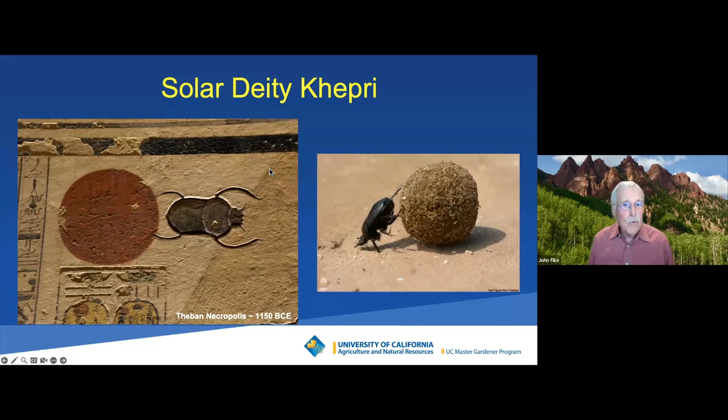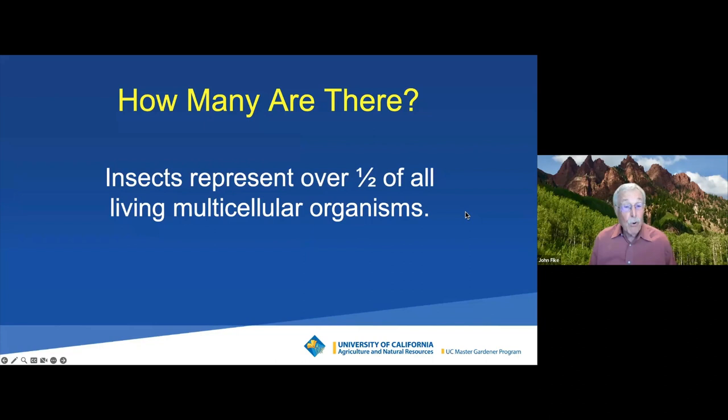So how many of them are there? Most of you would say a lot of them, and that's true. If you count up every single plant on Earth and every single animal, big and small, half of them will be insects. I'm talking about multicellular organisms — excluding bacteria and viruses. These are just all the plants and animals. That's a lot.